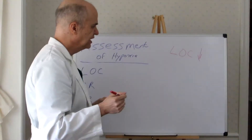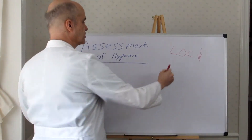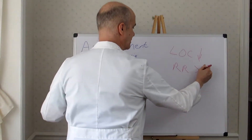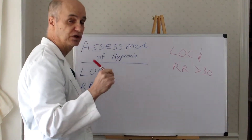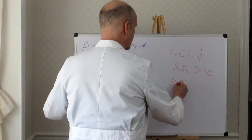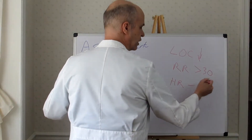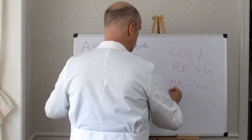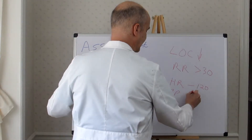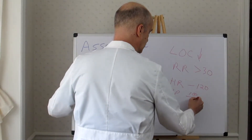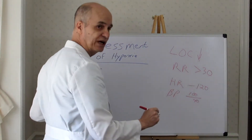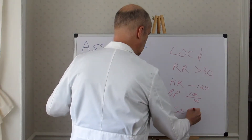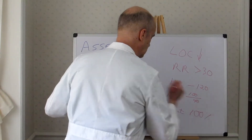He couldn't answer basic questions. His respiratory rate was very high — breathing greater than 30 times per minute. That's acute tachypnea. His heart rate was very tachycardic, somewhere around 120 beats per minute. Blood pressure was low, about 100 systolic over 40. His O2 saturation: 100%.